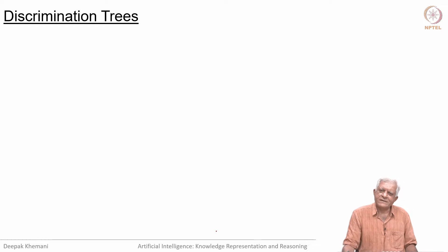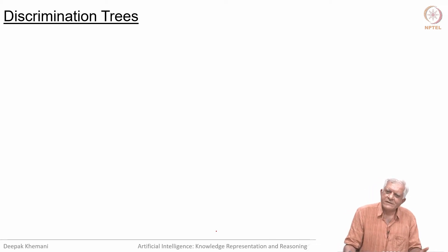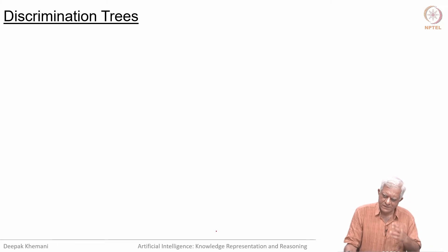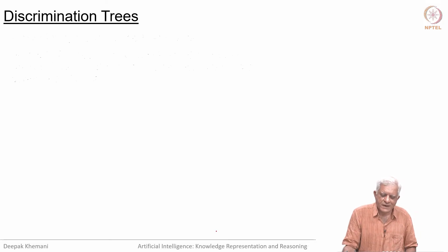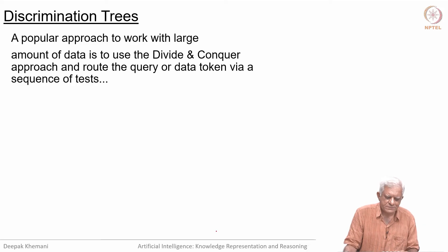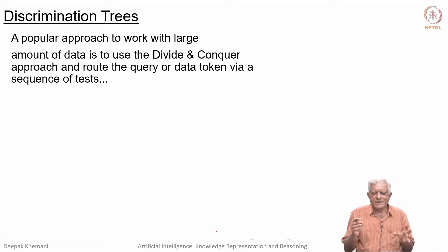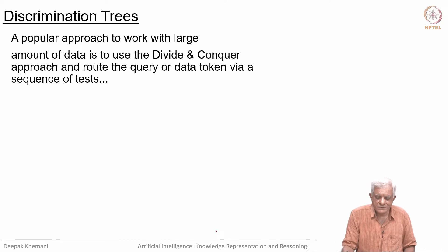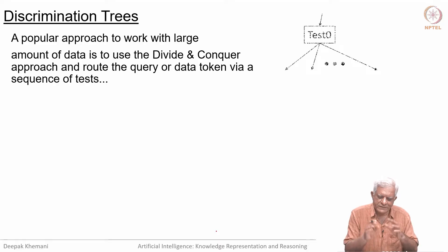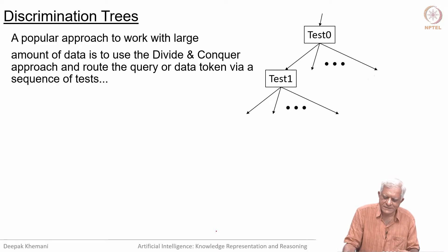The first thing is to organize data. Instead of having a sequential list of working memory elements, we want to organize them in such a way that the rules find it easier to match. Whenever we have large amounts of data, we often tend to use some kind of a divide and conquer strategy, so that you divide the data and traverse trees called discrimination trees.